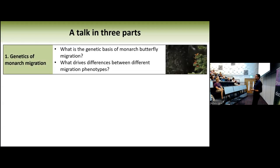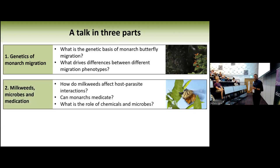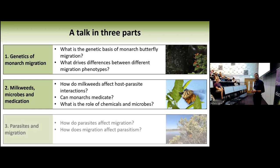I want to talk about three different aspects of our research. First, monarch migration and the genetic basis of migration — it's a great system because migration is not a learned behavior. Second, milkweeds, microbes, and medication — bringing in the parasite and understanding the role of different milkweeds in driving host-parasite interaction, and how milkweeds affect the microbiome and influence parasite infection. Third, the interaction between parasites and migration — how parasites affect migration, how migration affects parasites, and how migration can act as a way to reduce parasites on a yearly basis.